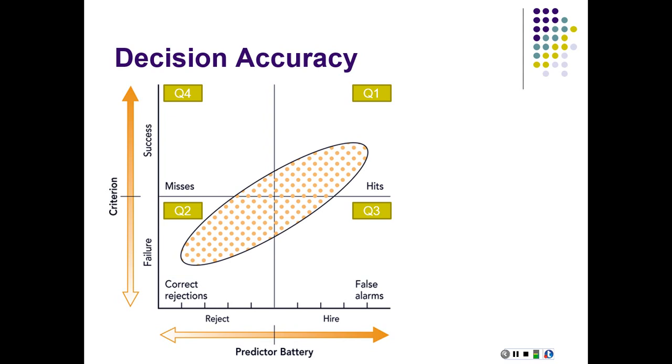Then we have in quadrant three those people who we hired and then they were failures on the job. They did not perform as well as their predictors implied they should have. And then quadrant four, we've got the people who we did not hire who would have been successful. This is an example where the predictor battery failed us because we should have hired them. They would have been great on the job, but we didn't hire them. So those are the four quadrants.